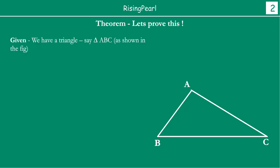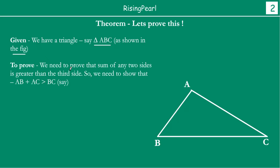And we are going to now prove why this theorem is always true. We start by stating what we have given. We have a triangle ABC. We have to prove that the sum of any two sides is greater than the third side. For the purpose of this proof, we are going to prove that AB plus AC is greater than BC.